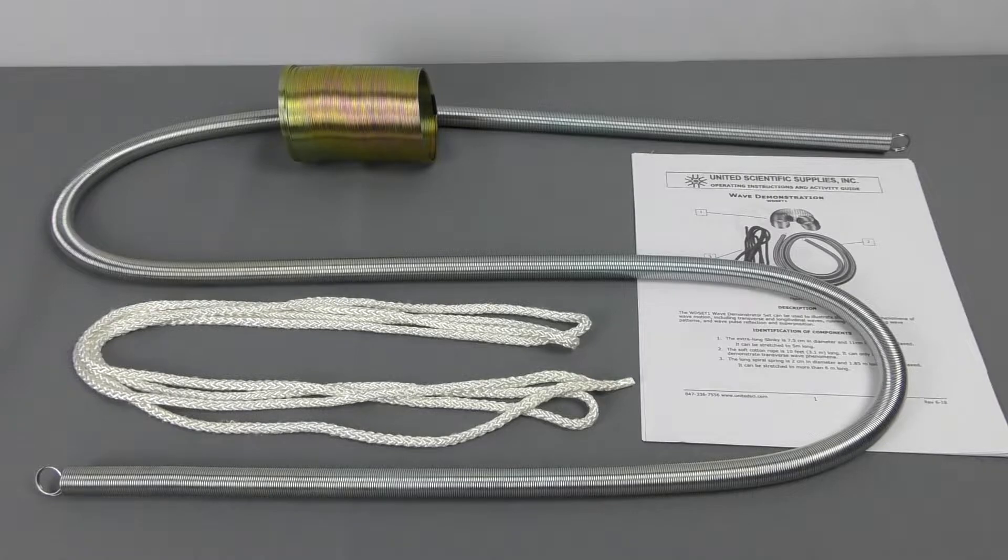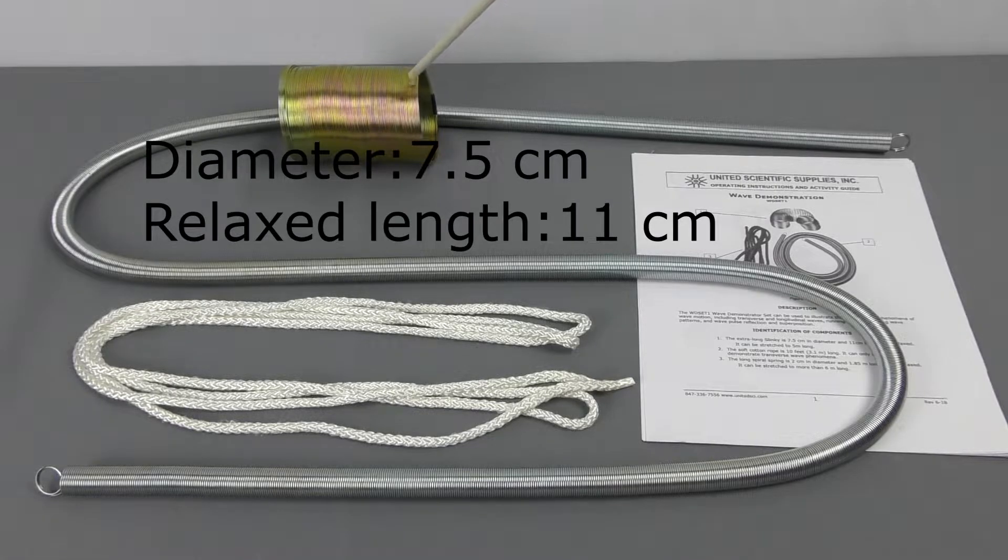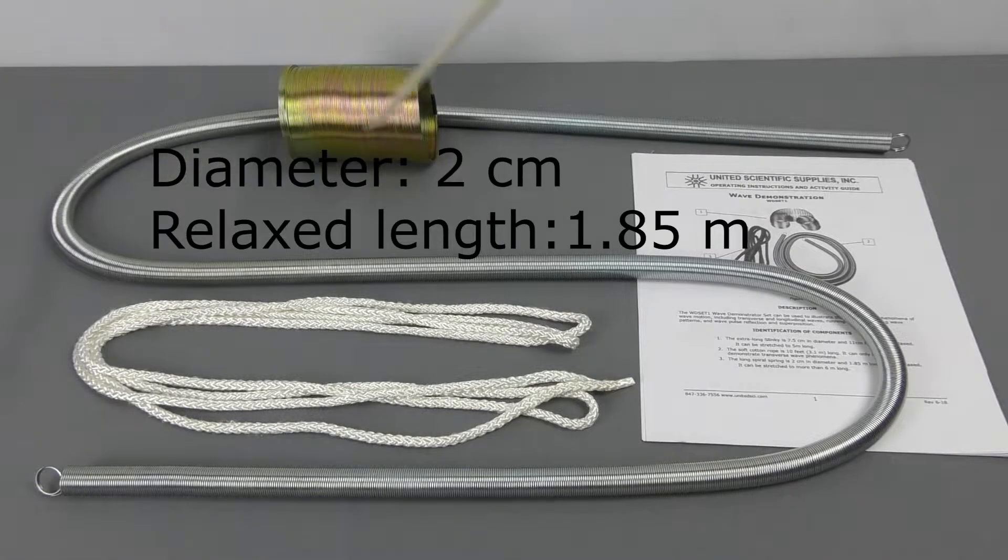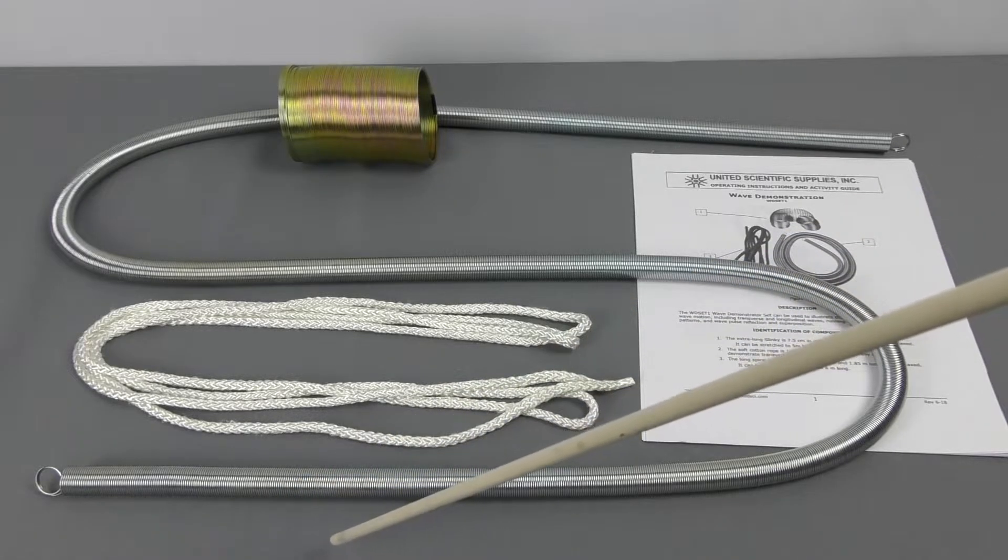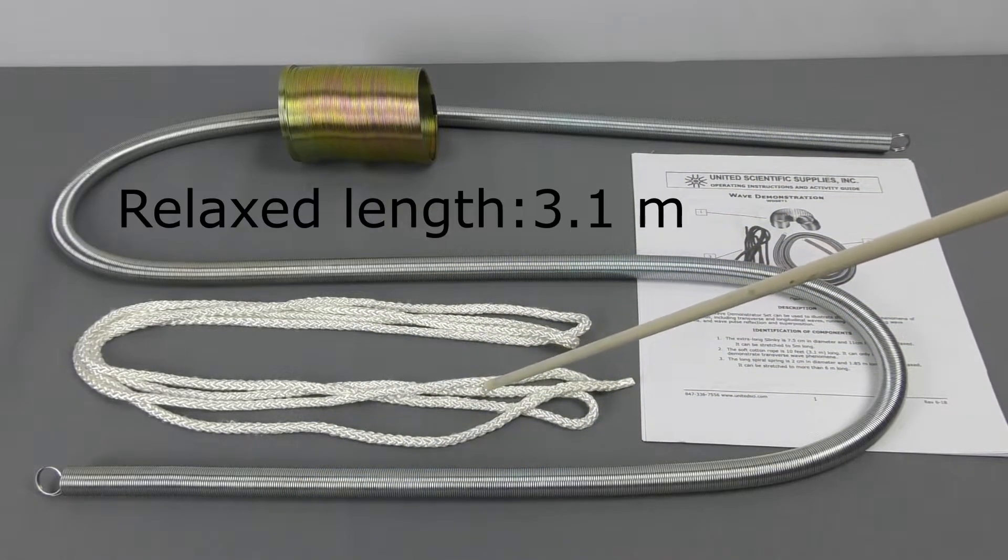The kit includes an extra-long slinky, a long spiral spring, and a soft cotton rope.